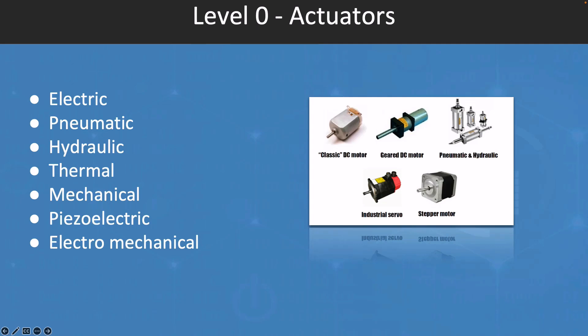The electric actuators are actuators that use electric motors to convert electrical energy into mechanical motion. They are widely used in a variety of industrial applications and are known for their reliability and accuracy. Pneumatic actuators use compressed air to generate mechanical motion. They are commonly used in applications where high forces and speed are required, such as the automation of manufacturing process.